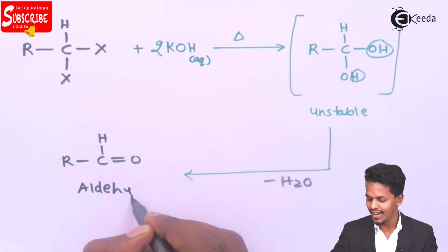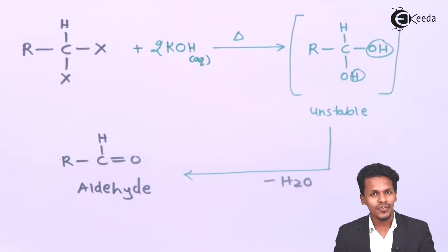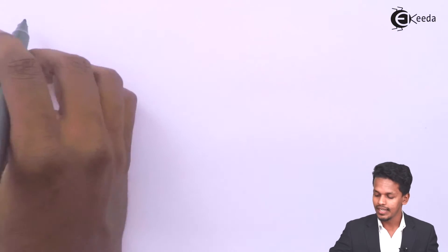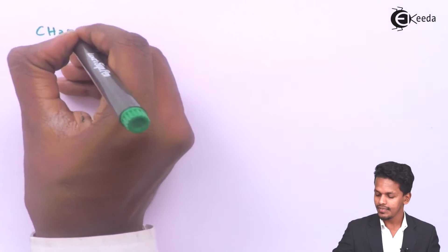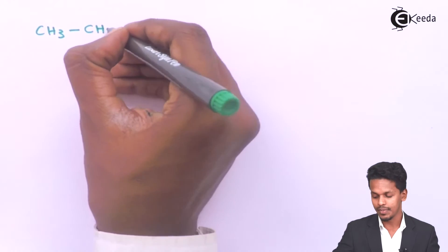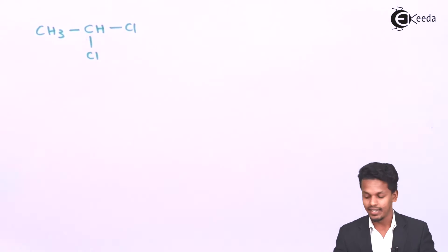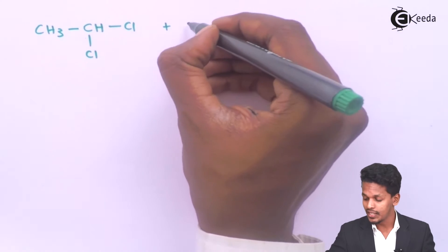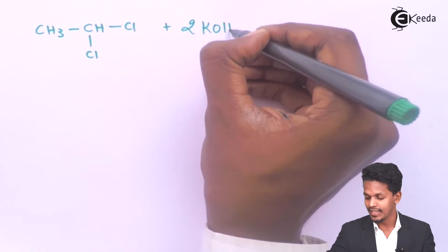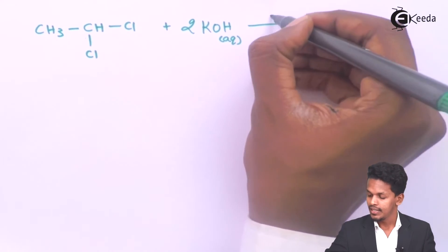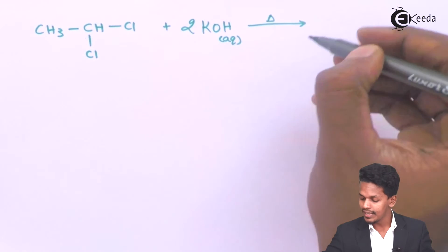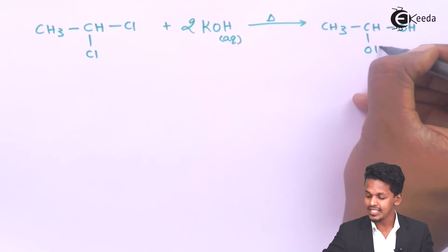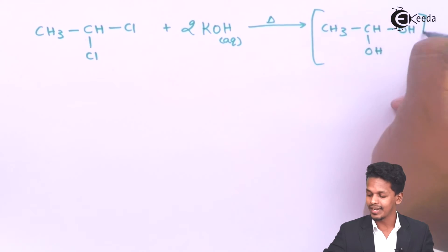For example, to prepare an aldehyde using a germinal dihalide, consider CH₃CHCl₂ — a dihalide with chlorine atoms on the terminal carbon — undergoing hydrolysis in the presence of 2 moles of KOH in aqueous solution. The product is CH₃CH(OH)₂, which is an unstable intermediate.